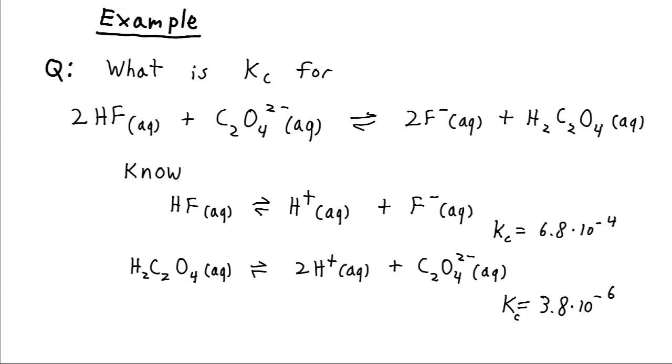Now let's say that we want to find the equilibrium constant for this reaction where we have hydrofluoric acid combining with oxalate anions to produce fluoride anions and oxalic acid. Now unfortunately, if we try to look up this reaction in some tabulated information, we don't find it. But we can look up the equilibrium constants for these two acids dissociating.